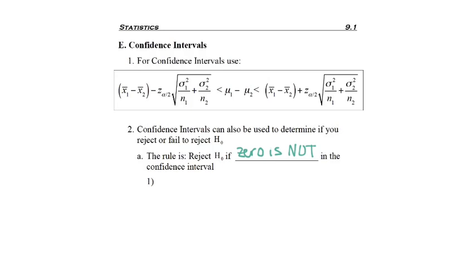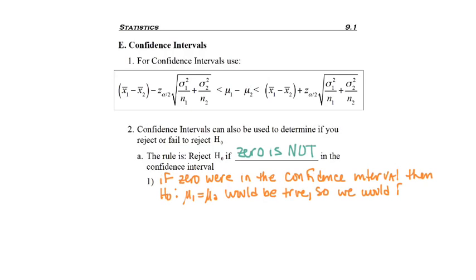And that kind of throws people off the way it's written, so let's talk about it another way. If zero were in the confidence interval, then H0, meaning mu1 equals mu2, could be true. And so we'd want to fail to reject H0. If this statement is possible, then we shouldn't be rejecting H0. But it's kind of written backwards up here.